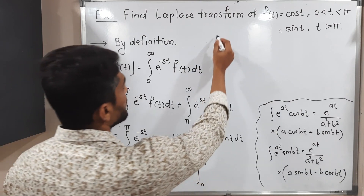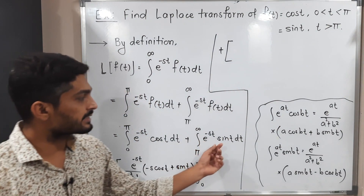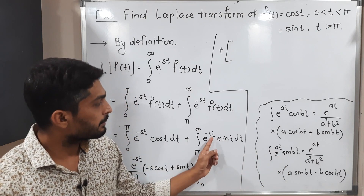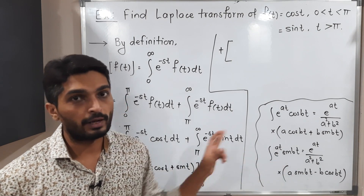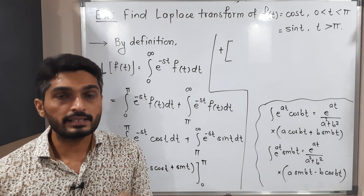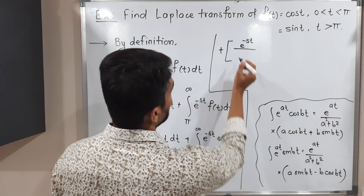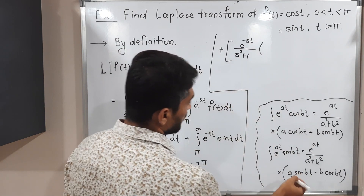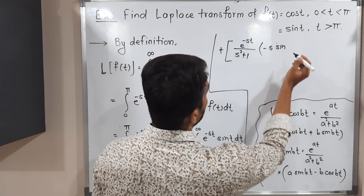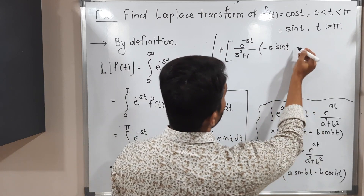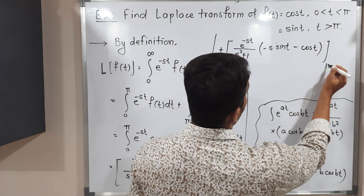For the second integral, we use the sin formula. For e^(-st) sin(t), comparing: a equals minus s and b equals one. Substituting: e^(-st) divided by (s² + 1), times (minus s sin(t) minus cos(t)), with limits π to infinity.